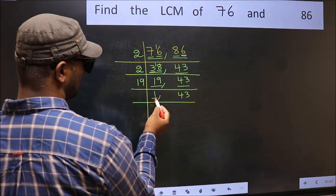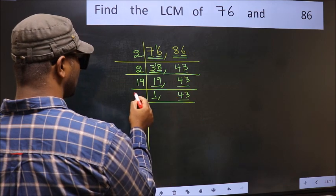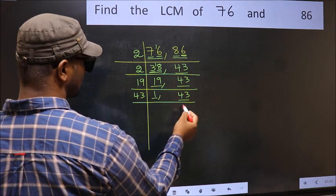Now we got 1 here. So focus on the next number, 43. 43 is a prime number, so 43 once 43.